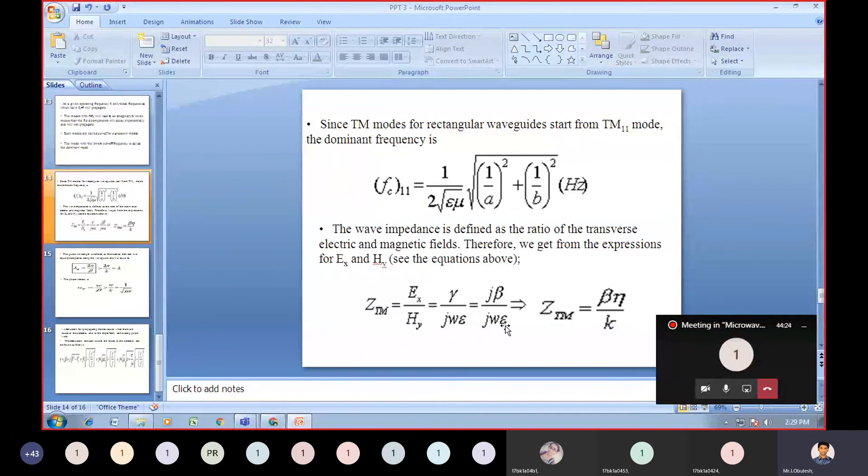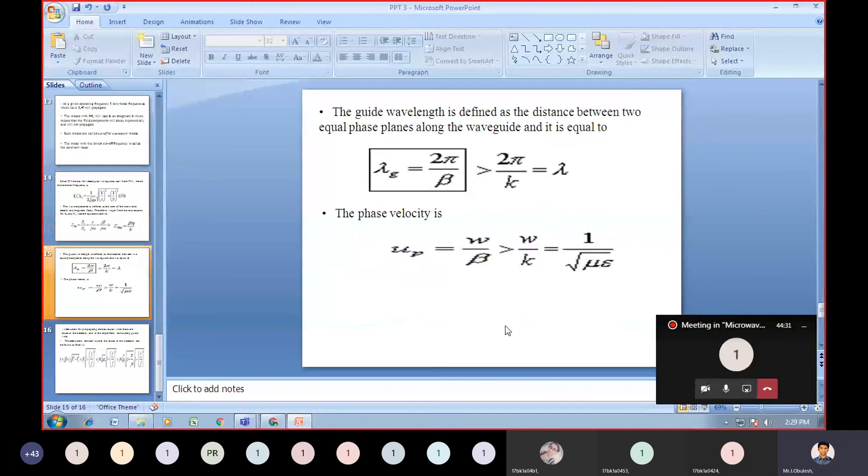The wave impedance is defined as the ratio of the transverse electric field to magnetic field. The guided wavelength is defined as the distance between two equal phase planes along the waveguide, and it is λ_z equals 2π/β, which is greater than 2π/K equals λ.